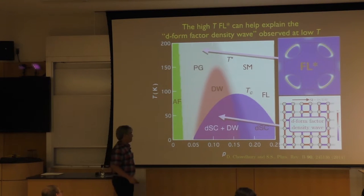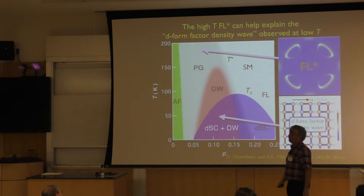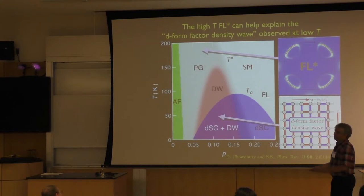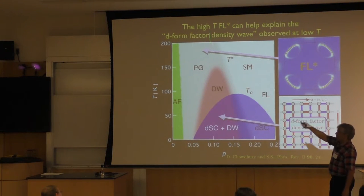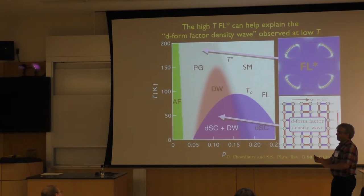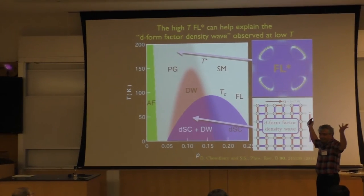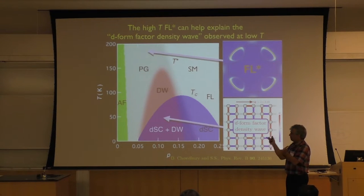But the trouble with all those explanations is maybe they work in one regime, but how do they work up here? Because if DW went all the way up there, in that model I'd have a really hard time imagining why you would get T squared resistivity, because the DW would be strongly temperature-dependent. Many of us, including us, worked on those models. I think if you look at everything together, this is the most plausible scenario.